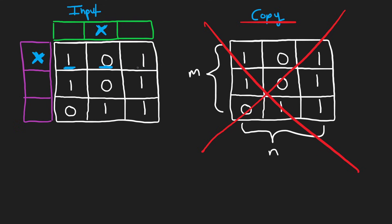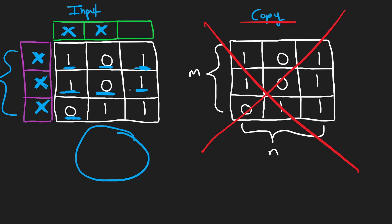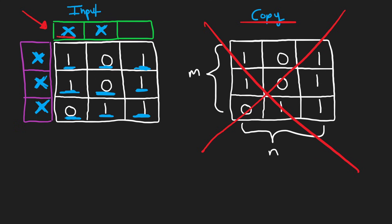We continue: this position is a one, this is also a one, this is a zero. We already know this column is going to be set to zero, but we want to mark that this row needs to be set to zero as well. This is a one, we don't do anything. This is a zero, so we know this column and this row have to be set to zero. Now we see that every row is going to be set to zero, so the entire matrix will be zero. This is a one and this is a one — nothing to do. Now we look at our marker memory: the first column needs to be set to zero, the second column needs to be set to zero, and the third column does not.